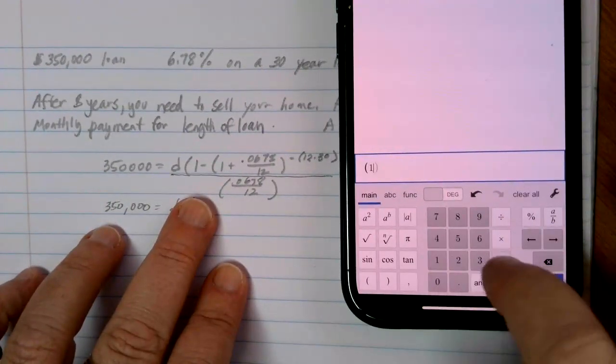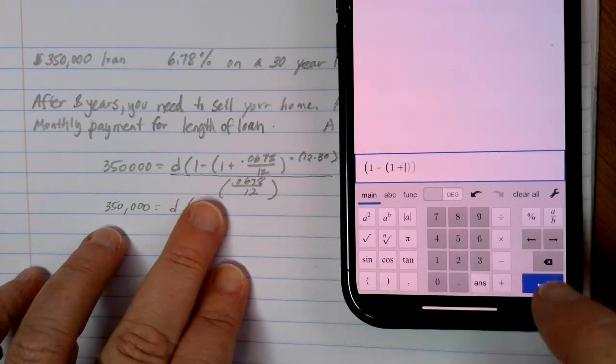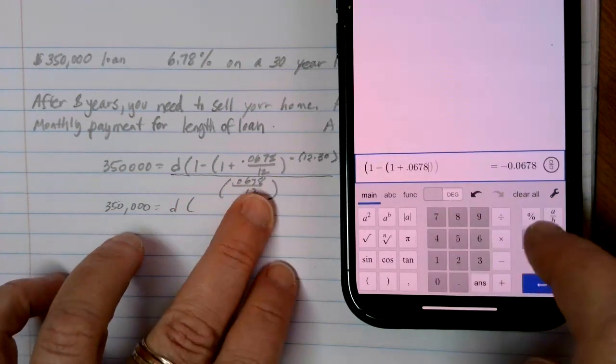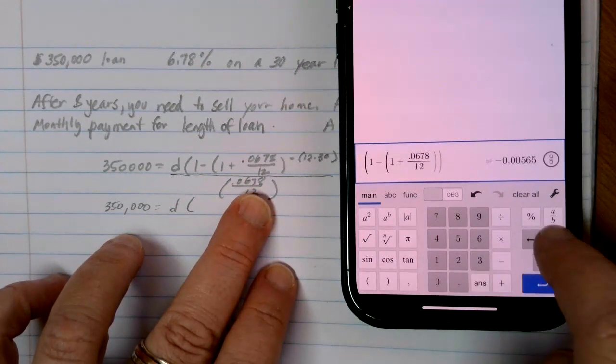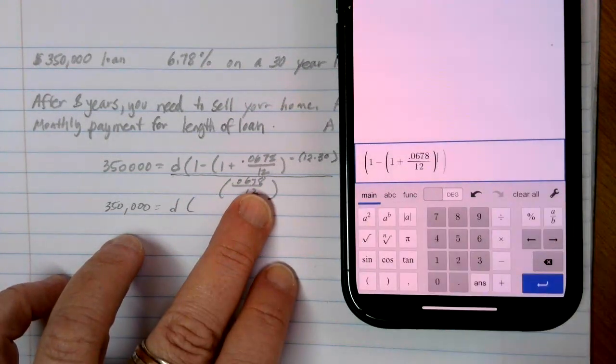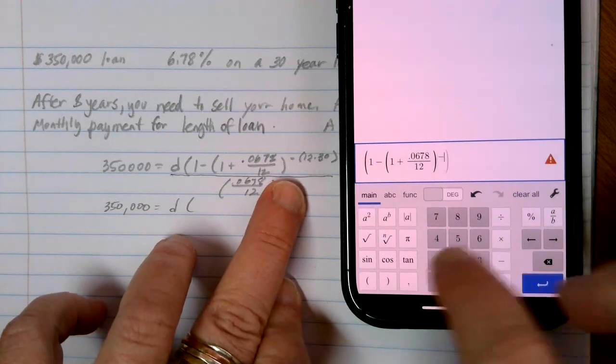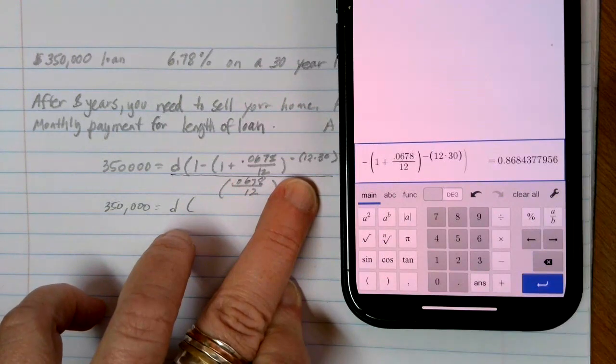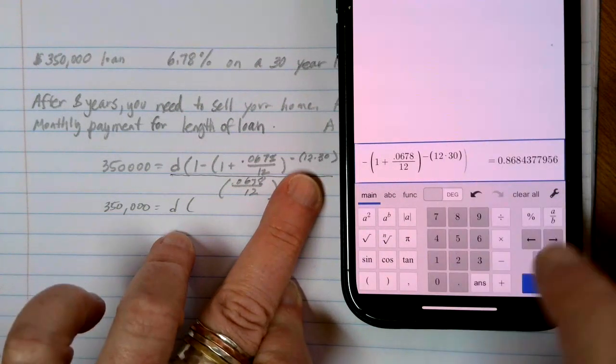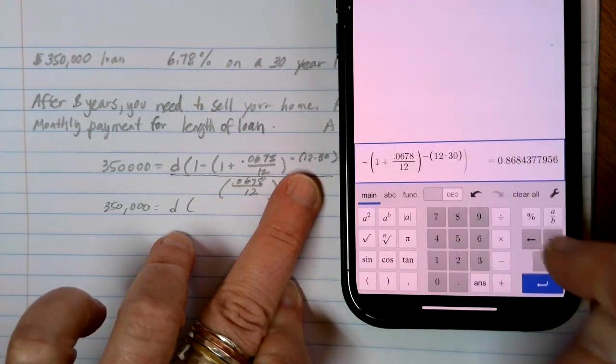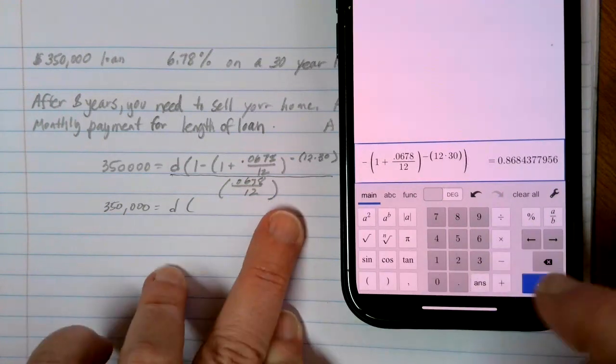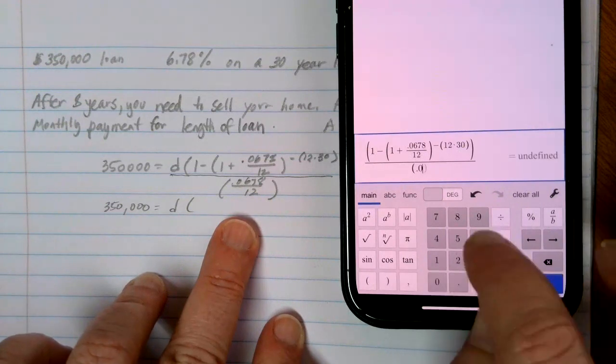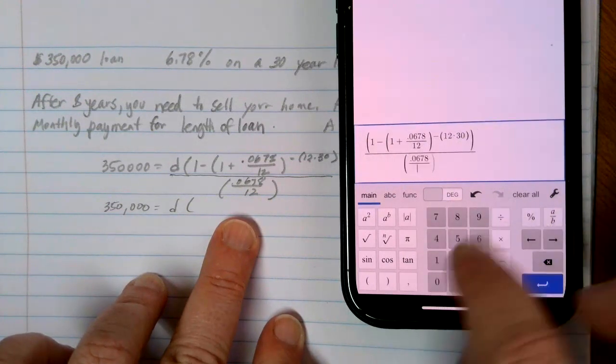So we're going to do 1 minus parentheses 1 plus 0.0678 divided by 12. Close that set of parentheses off, and then we want an exponent of negative 12 times 30. Again, make sure that exponent is all, or both the 12 and the times 30 are all in the exponent. Close the parentheses, and divide the whole thing by this 0.0678 over 12.